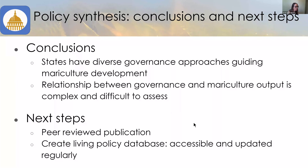We also looked at individual governance attributes and their associations with mariculture output. We found that an easily identifiable government contact for marine aquaculture, government-provided best management practices, and right-to-farm legislation applying to aquaculture were positively and significantly associated with some metrics of mariculture output. For example, states with best management practices documents had a significantly higher number of farms. However, we can't say anything about cause and effect — best management practices could facilitate mariculture development, or extensive development could prompt the creation of best management practices. We plan to submit a peer-reviewed publication and develop the governance catalog into a living, freely accessible policy database updated regularly.